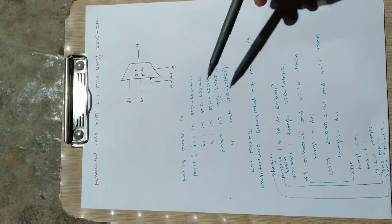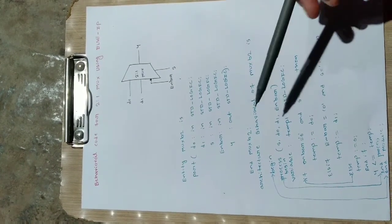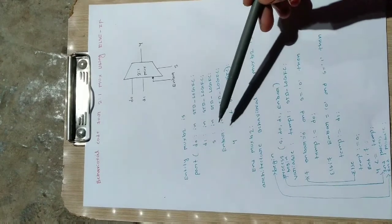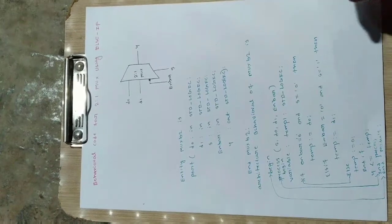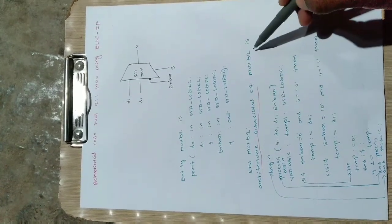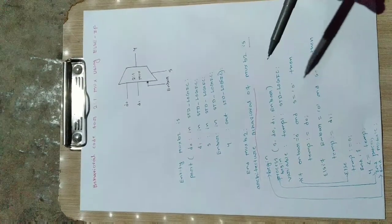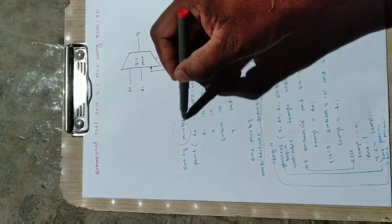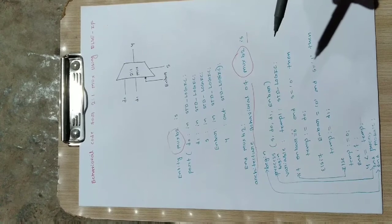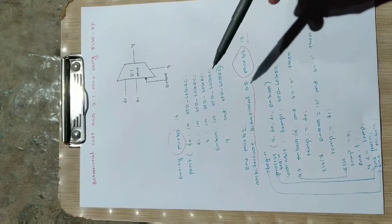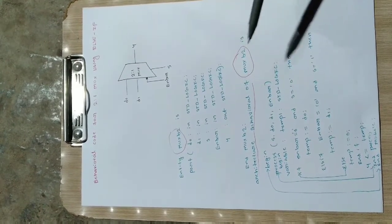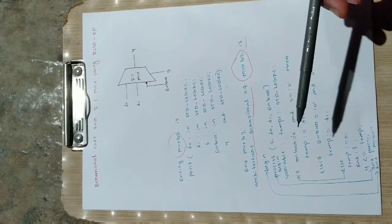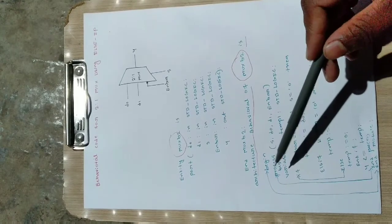Now I have defined the input and output ports, so end mux_B2 to close the entity. Now we write: architecture behavioral of mux_B2 — this name should be the same as the name used in defining the entity, so these two names must match. We have defined the entity in the first section and now we call that entity in the second section. Then begin this architecture, and we write the process statement.